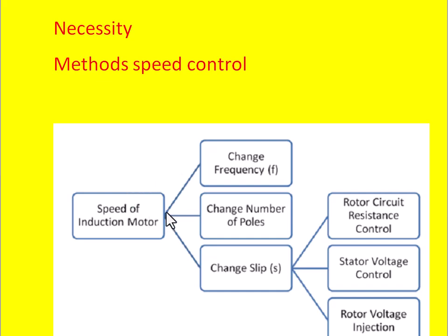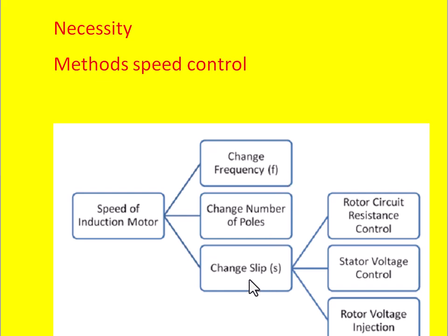There are three ways to control the speed of the three-phase induction motor: one is by changing the frequency of the supply, the other is by changing the number of poles on the stator, and the other is by changing the slip of the induction motor.